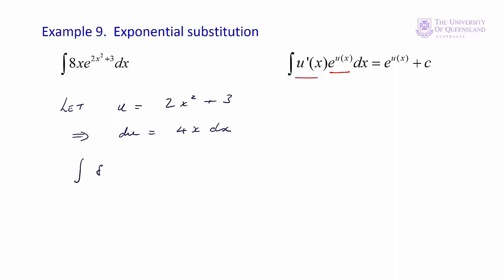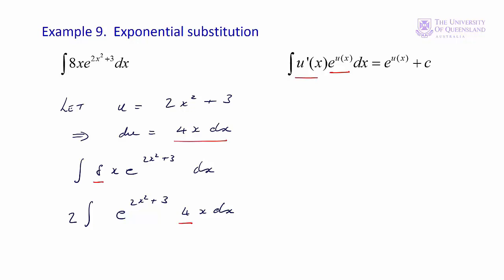So we replace 4x dx with du. Our original problem is the integral of 8x e to the 2x squared plus 3 dx. We need to rearrange that slightly — we want 4x dx, so we rewrite it as e to the 2x squared plus 3 times 4x dx. To get from 8 to 4, we take 2 outside the whole integral. That equals 2 times the integral of e to the u du. Integrating and substituting back in for u, we get 2 times e to the 2x squared plus 3 plus c.